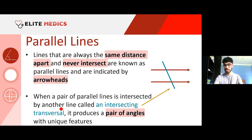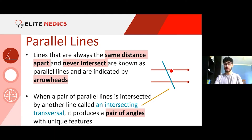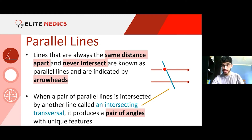Generally you won't see the term 'intersecting transversal' much in exams — they just give you the line and expect you to know what to do, rather than asking you to name it. But it's helpful to know the name. It produces eight angles of interest around the two intersection points.